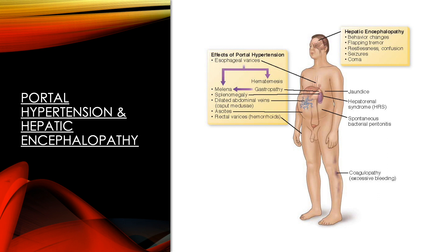Esophageal varices occur due to decreased blood flow to the liver; pooled blood within the portal vein creates high pressure, potentially causing vessel weakening and possible rupture — a medical emergency. With thrombocytopenia present, proper clotting will not occur. Melena — dark stool — results from blood in the stool due to hemorrhoids or internal bleeding. Coagulopathy refers to excessive bleeding due to deficient coagulation. Fetor hepaticus describes an extremely unpleasant breath odor associated with portal hypertension. Hepatic encephalopathy is caused by increased ammonia and toxins not detoxified by the liver, causing confusion, possible coma, and asterixis — tremors of the hands when extending the wrist.